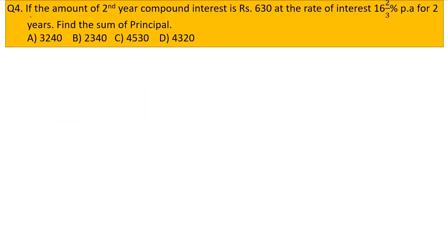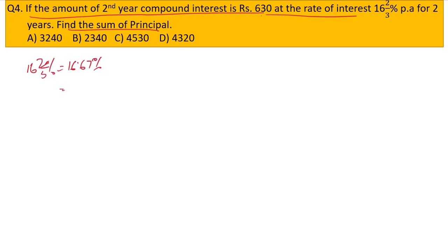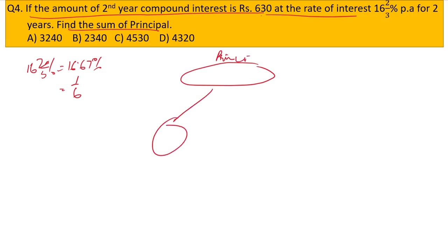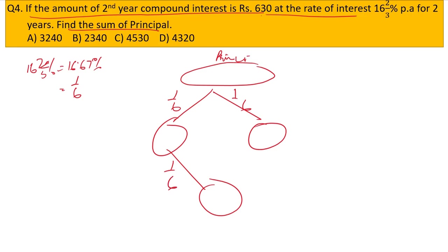The next question: if the amount of the second year's compound interest is rupees 630 at the rate of 16⅔% per annum for 2 years, find the principal. Now 16⅔% equals 1/6. Using the tree method again with rate = 1/6, where 1 is interest and 6 is principal.